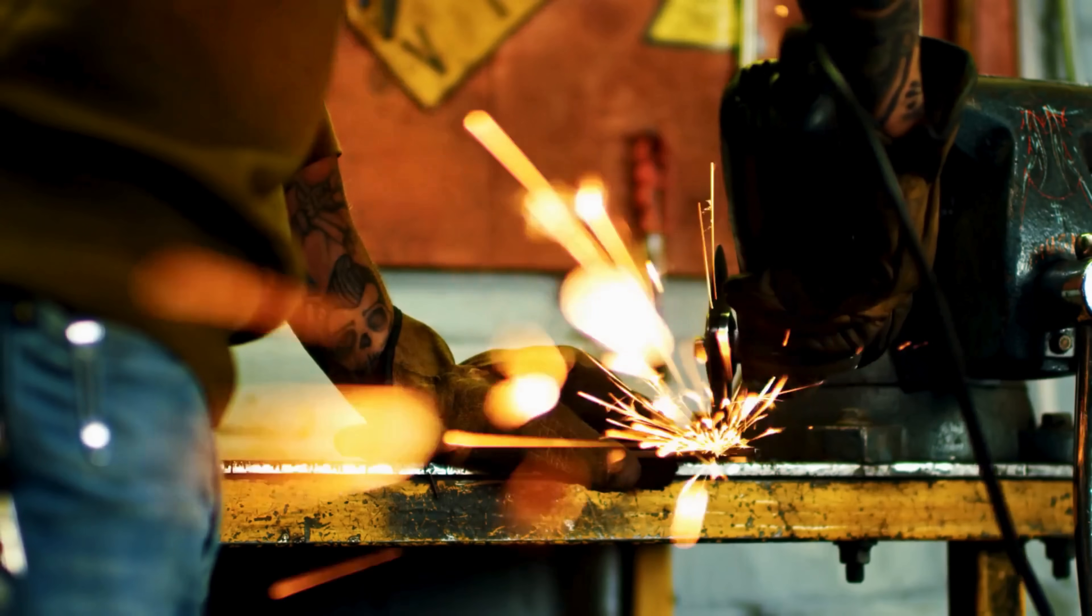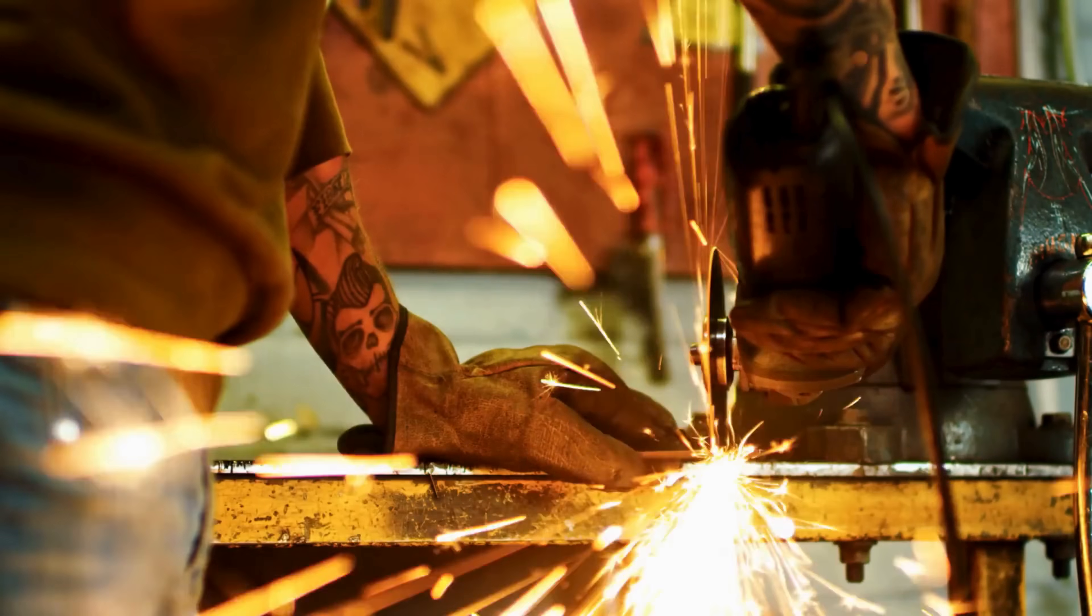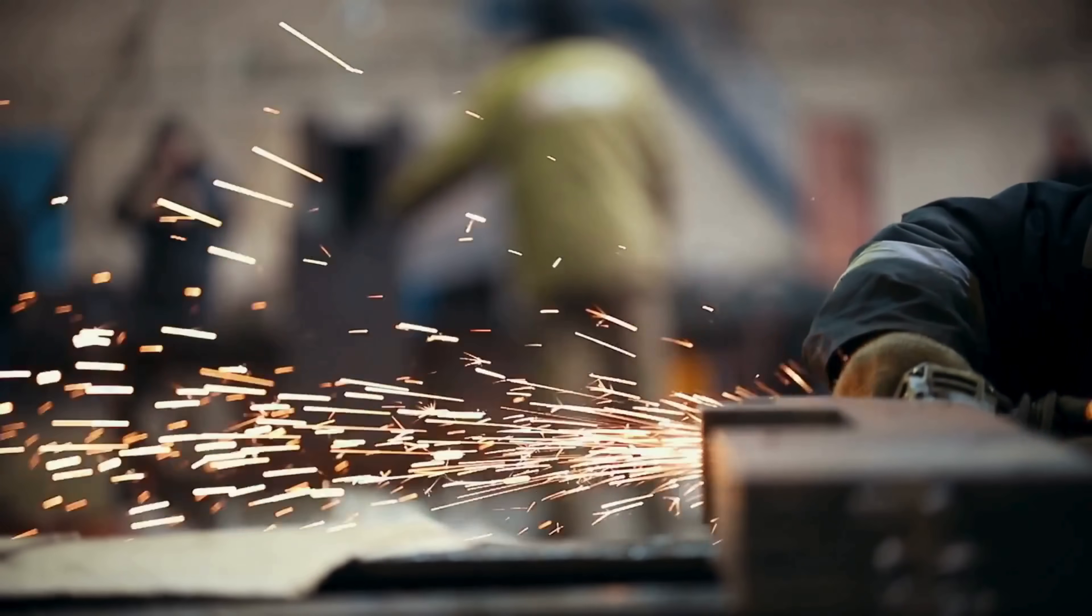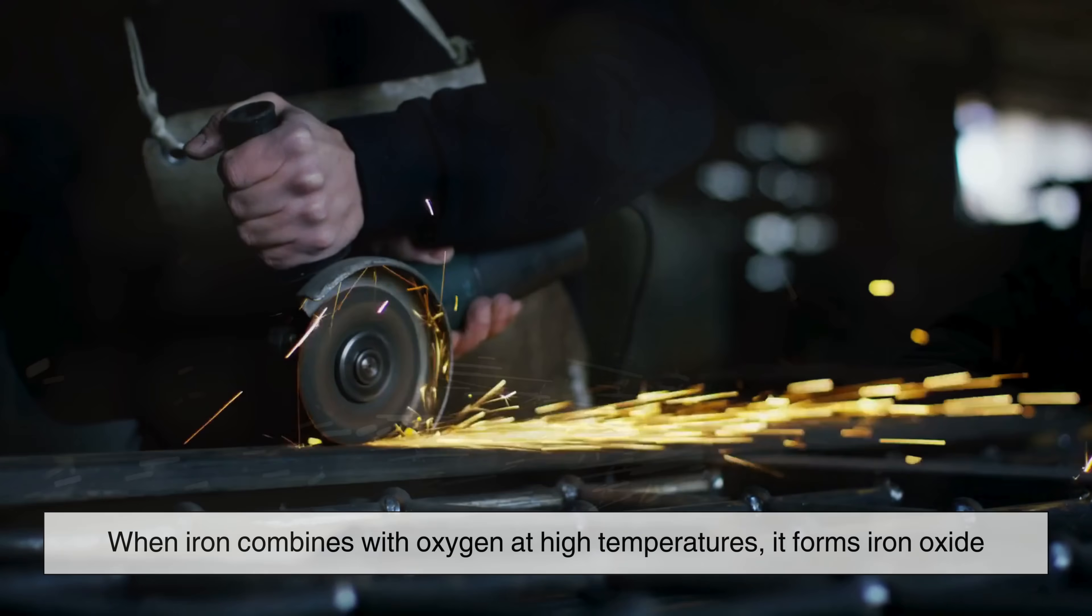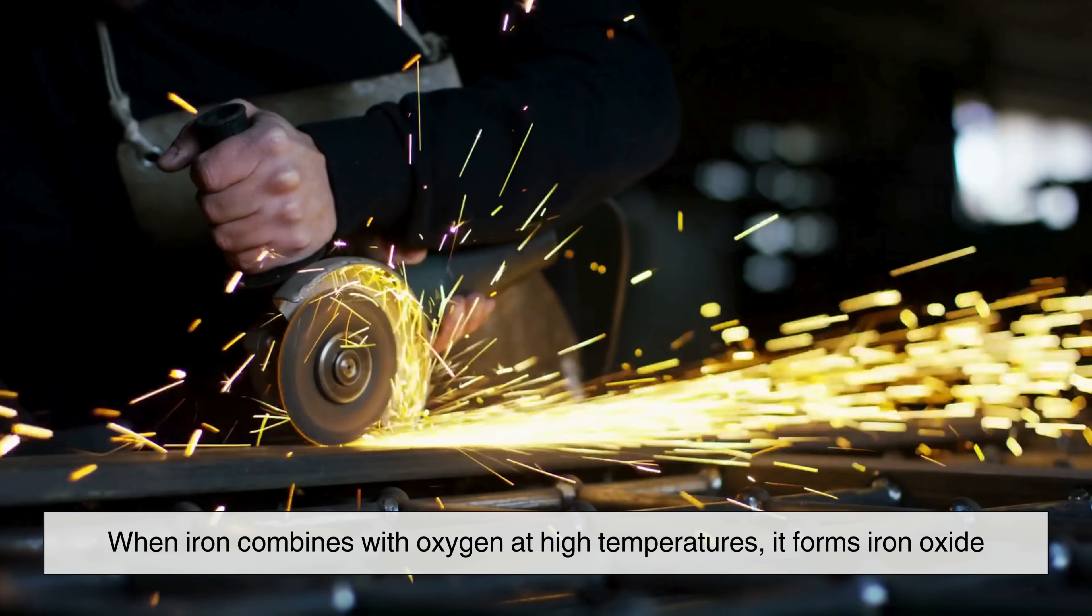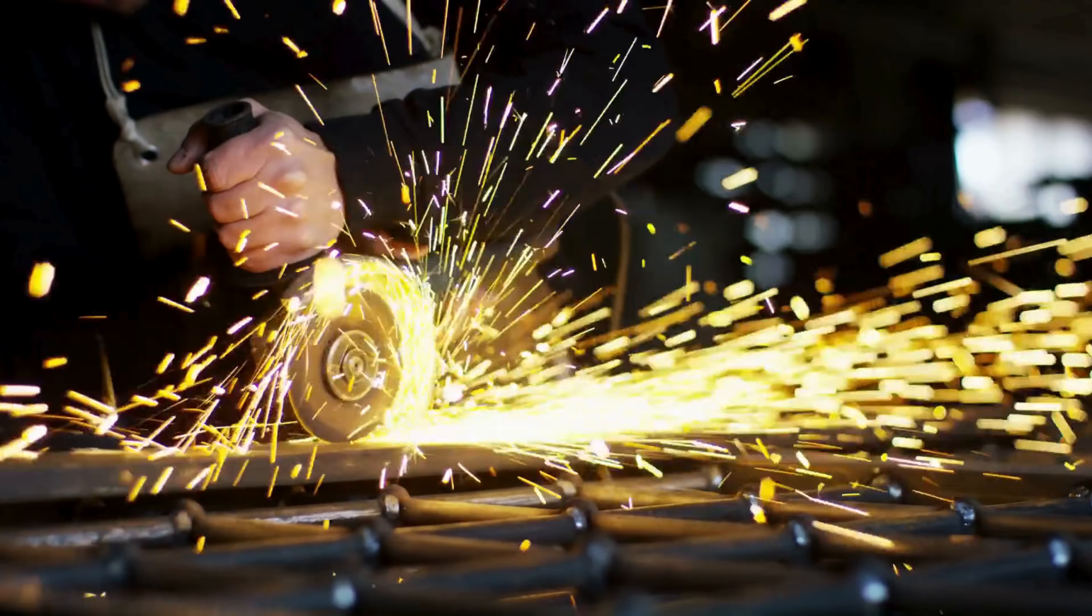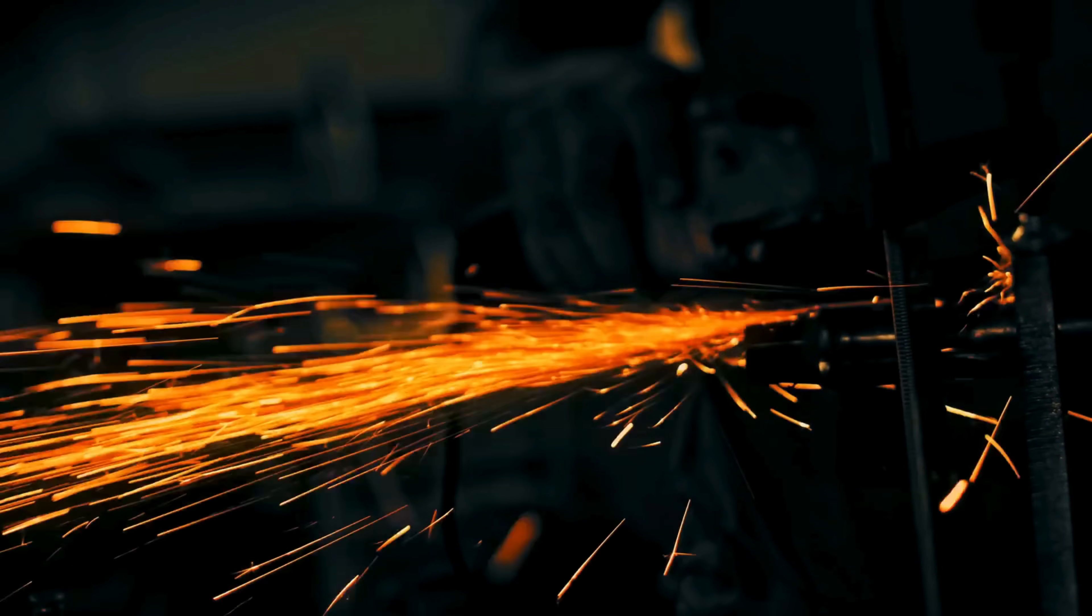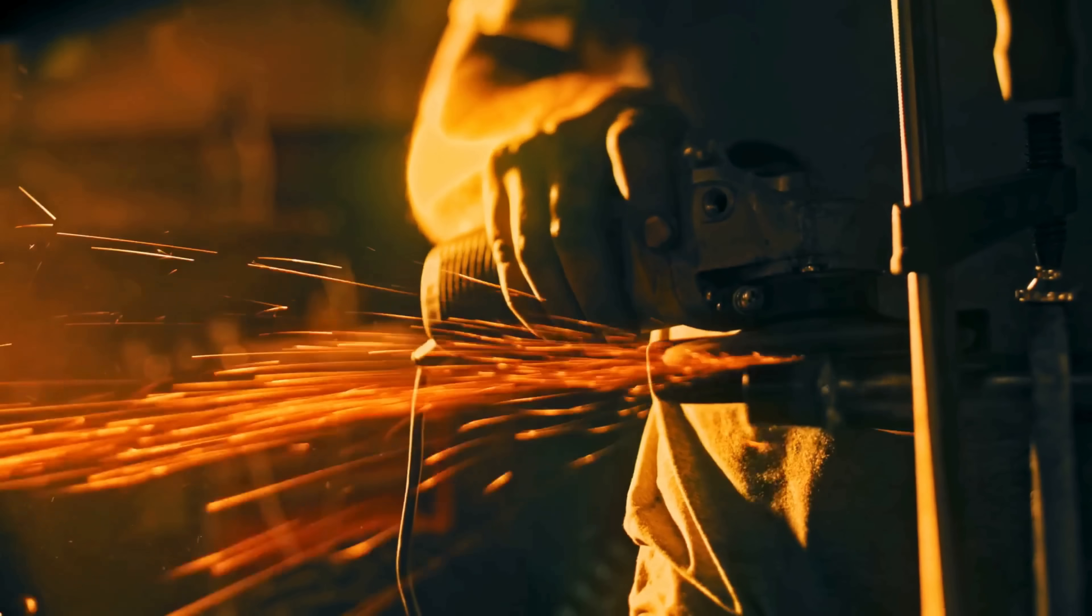As these tiny, glowing fragments break away from the metal surface, they react immediately with oxygen in the air. The heat generated by the grinding process is more than enough to initiate oxidation. When iron combines with oxygen at high temperatures, it forms iron oxide, more commonly recognized as rust. However, in this rapid oxidation process, the reaction releases additional heat, further intensifying the glow of the sparks.